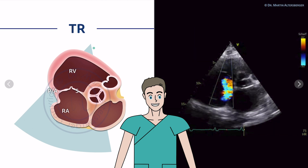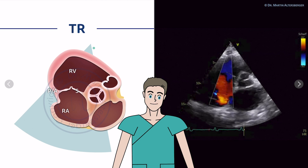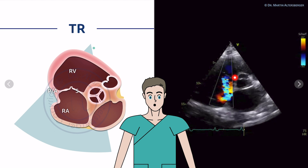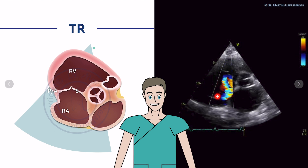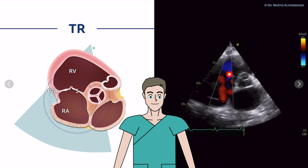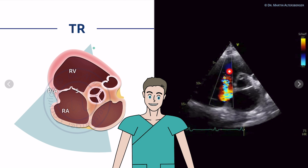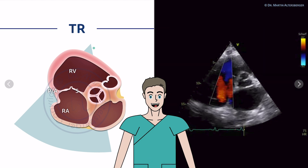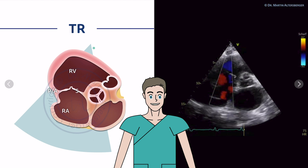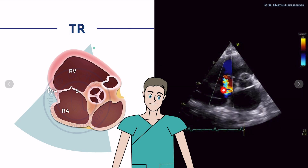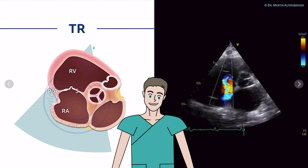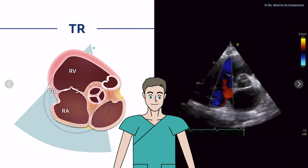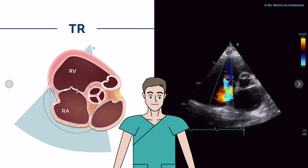Moving on to tricuspid regurgitation, we have a focused view on the tricuspid valve showing more moderate to severe tricuspid regurgitation. Keep in mind this is still not the optimal view — we do not see the origin of the jet — so it is probably severe, but we need another view to actually quantify TR.